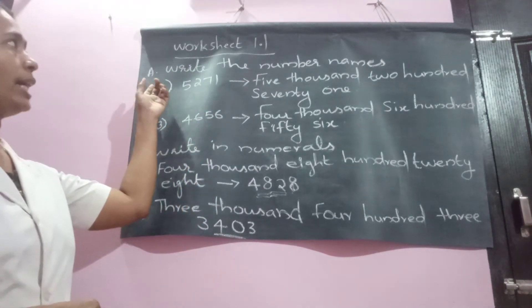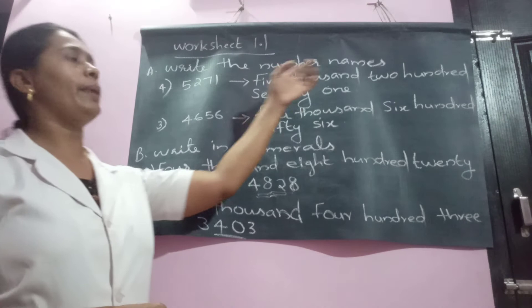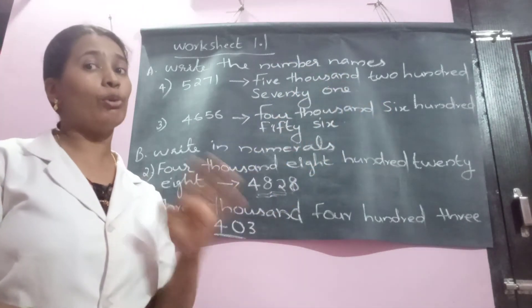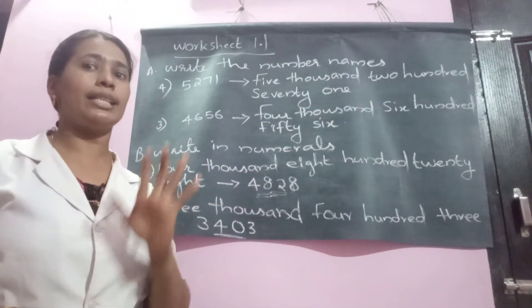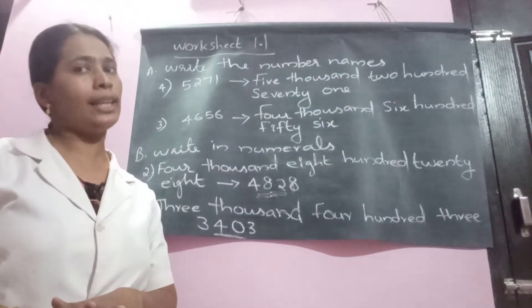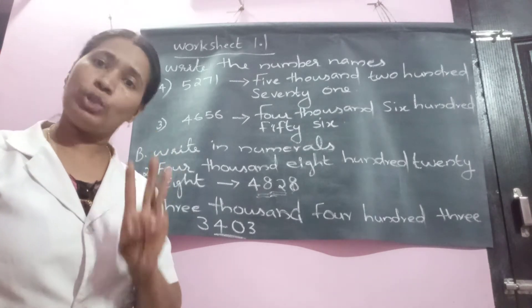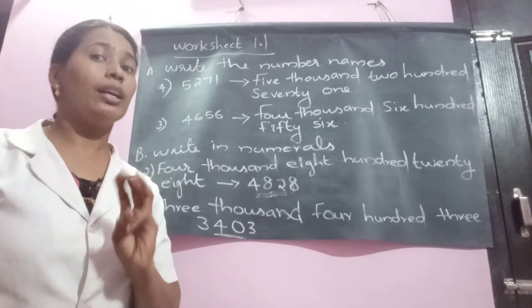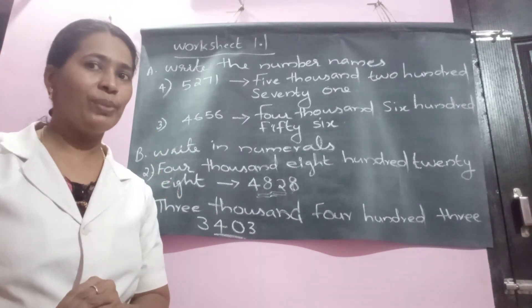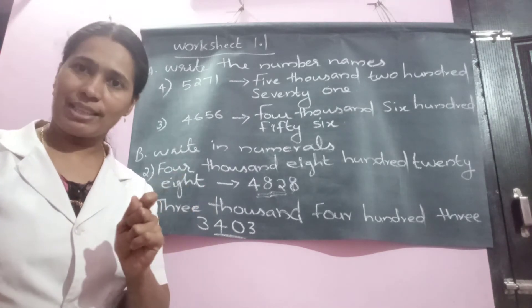Question number A says: write the number names. There are 4 or 5 questions in each section, but the teacher is answering only 2 or maximum up to 3 questions. The remaining questions you will write yourself.